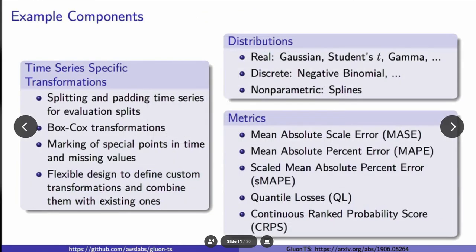Now let's look at example components. For time series transformations, we provide splitting and padding of time series for evaluation splits, as well as a box-cox transform. You can also mark special points in time and missing values. Most importantly, we have a flexible design for the user to define custom transformations. You can define your own feature processing transformations, as well as combine them with existing ones provided in the package.